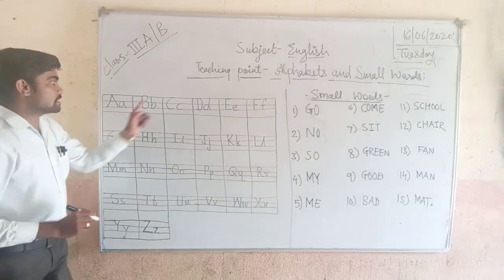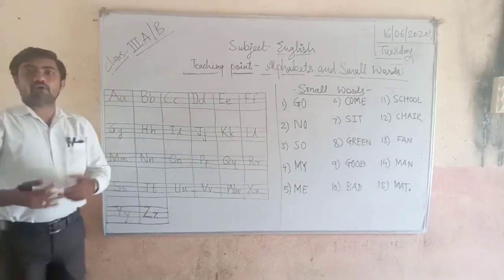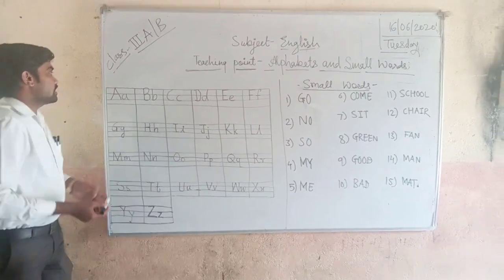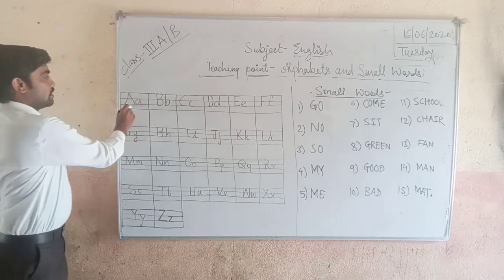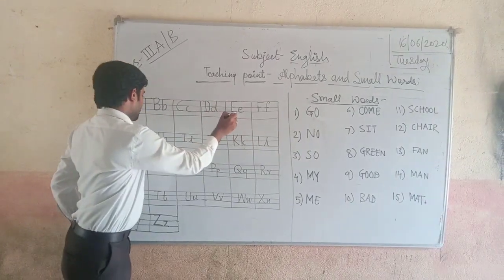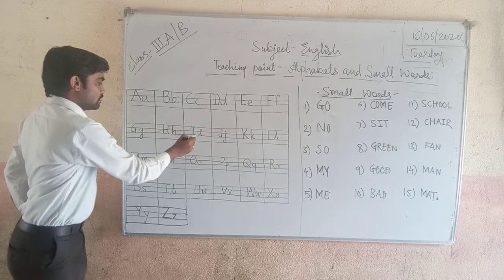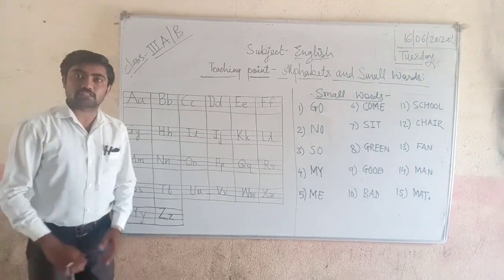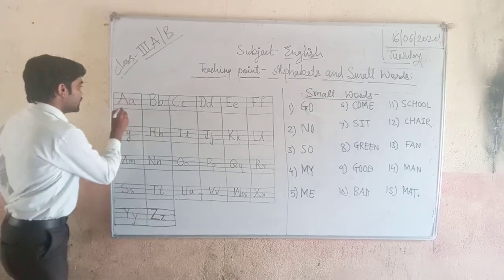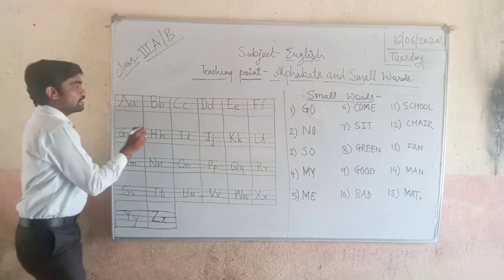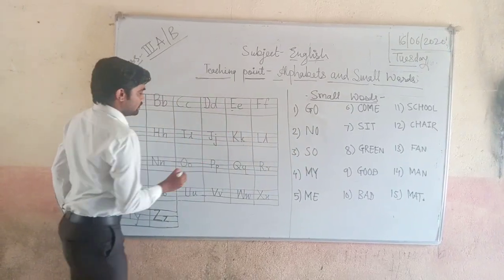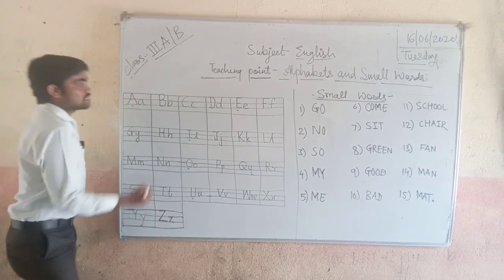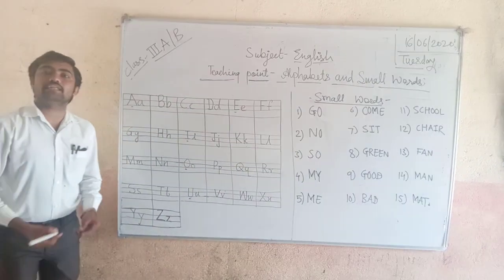Out of 26 letters, how many vowels are there? There are 5 vowels in English. Which are they? A, E, I, O, U. These are the 5 vowels in English subject. I will underline them: A, E, I, O, U. These are the 5 vowels in English.